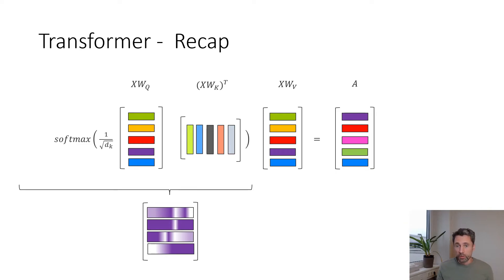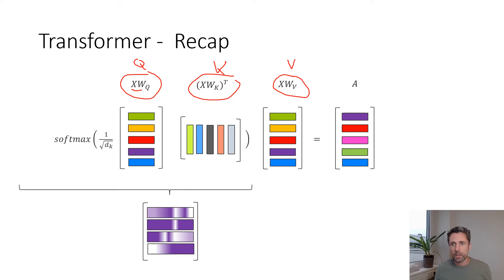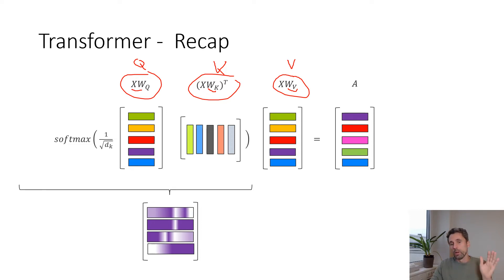For those of you who know what transformers are, let's recap the basic components. First, we have three matrices: Q for queries, K for keys, and V for values. These are the original set of tokens embedded into a learnable space. WQ, WK, and WV are matrices for projecting your tokens of dimensionality D into the internal transformer dimensionality.